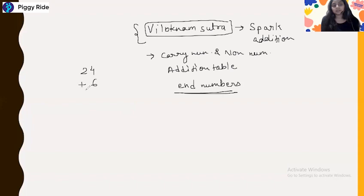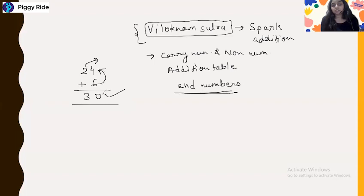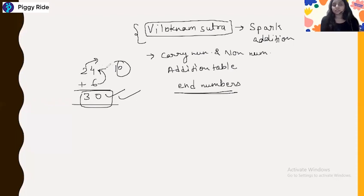For example, 24 plus 6 equals 30. How? You increase the 2 by 1 to get 3, because this is a carry number addition. Then you put the end number of 6 plus 4, which is 10, so the end number is 0. The answer is 30. This is spark addition — you see the question and immediately give the answer, no pen, no paper, no fingers needed.